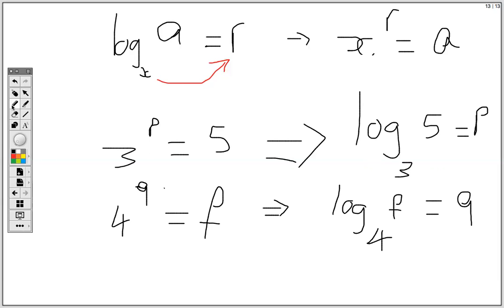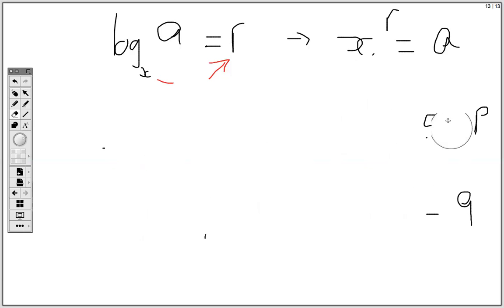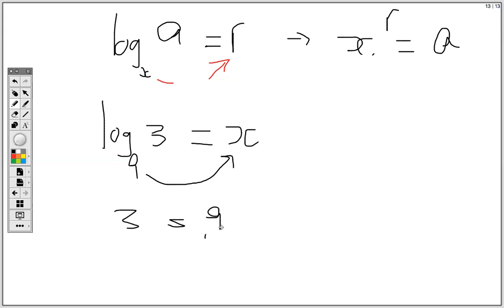Now let me do an activity where we need to simplify using the rule that we have here. Say for example, I have log base 9 of 3, and I asked you to simplify this. We can apply what we know that we can change log to exponential form. So I include an unknown, call it x. Then rewriting it as exponential form, I'll have 3 equal 9 to the x.